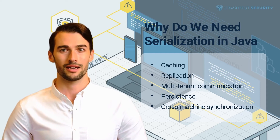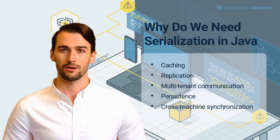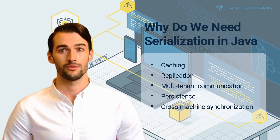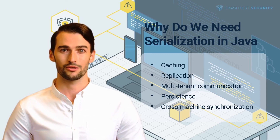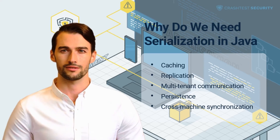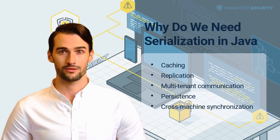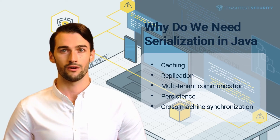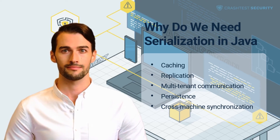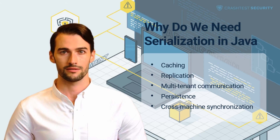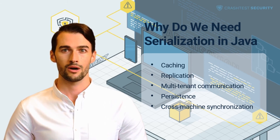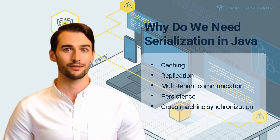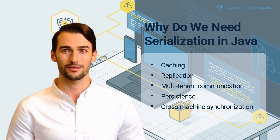Multi-tenant communication: Once the original object has been serialized, data structures can be transferred efficiently through a network of machines, exchanging information between different environments. Persistence: After applying serialization, Java can store the state of any object in a database or file system that can be used later. Cross-machine synchronization: The serialization protocol generates byte streams that work across different architectures and operating systems, allowing for synchronization between different JVMs.